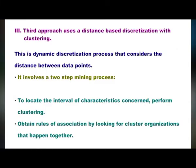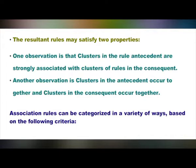The third approach uses distance-based discretization with clustering. This is a dynamic discretization process that considers the distance between data points. It involves a two-step mining process. First, you need to locate the interval of characteristics concerned that perform clustering. Next, you obtain rules of association by looking for cluster organizations that happen together. The resultant rules may satisfy two properties: clusters in the rule antecedent are strongly associated with clusters in the consequent, and clusters in the antecedent occur together while clusters in the consequent occur together.